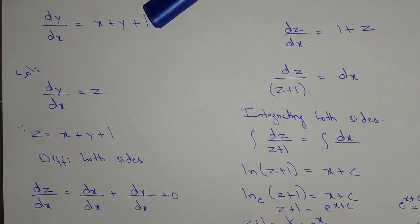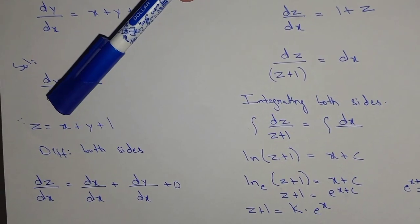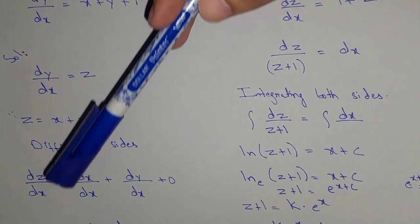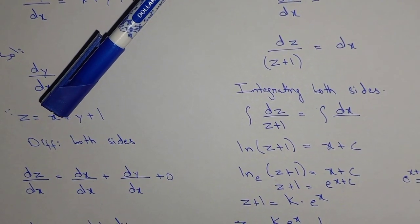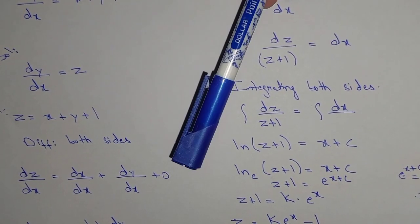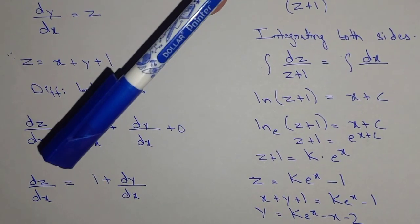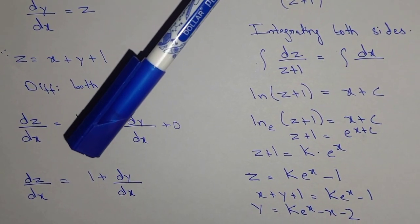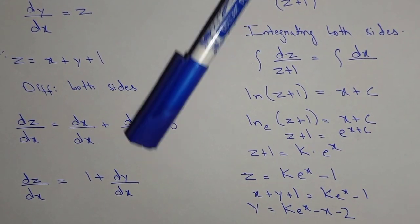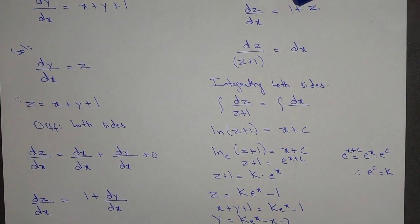Now differentiating x plus y plus 1 = z on both sides, we have dz/dx equal to dx/dx plus dy/dx plus zero — the derivative of a constant is always zero. So dz/dx equal to 1 plus dy/dx.